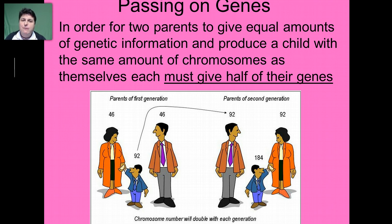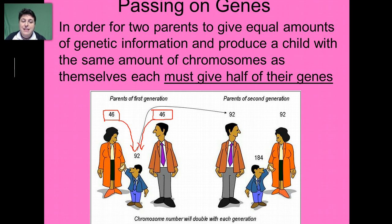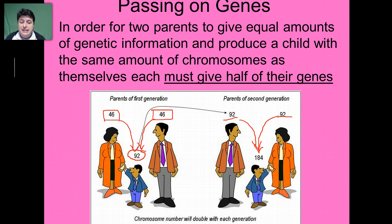Let's take a look at an example of what would happen if this wasn't the case. If two human parents, each having 46 chromosomes, gave their complete complement — all of their chromosomes — to the next generation, the chromosome number would double. If this continued into the next generation, the chromosome number would double again. This exponential increase in chromosome number would make it very difficult biologically for life to continue. So it's essential that we have a process which allows for parents to give half of their genes if we're going to reproduce sexually.